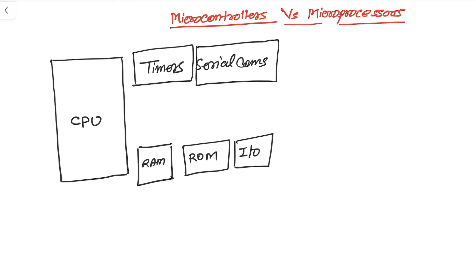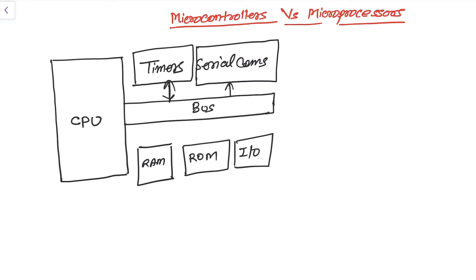All these peripherals are connected with the data bus and the address bus. In contrast to this microprocessor architecture, a microcontroller contains everything in the system itself.